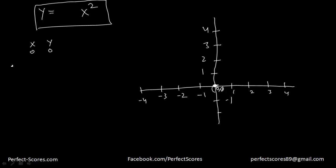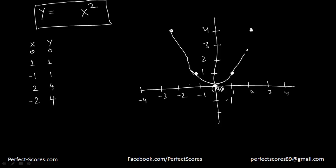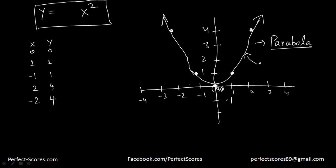When x is 1, y is 1 — so that's another point. When x is minus 1, y is still 1 — that's another point. Similarly, when x is 2, y is 4, and when x is minus 2, y is still 4. Now if I connect these points, I'm going to get a u-shaped curve which is expanding upward. So this is what we call a parabola, and the equation for this parabola is y is equal to x squared.